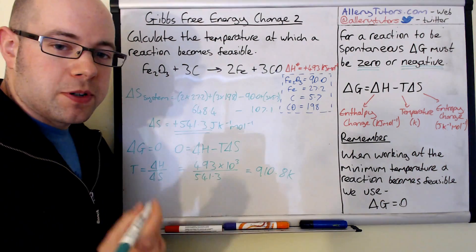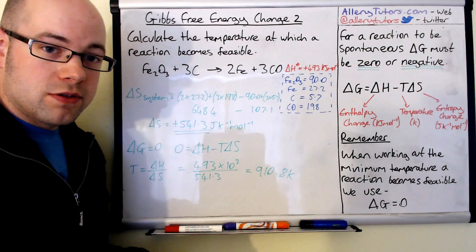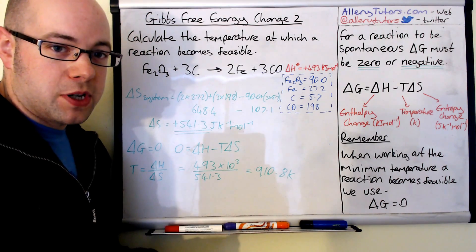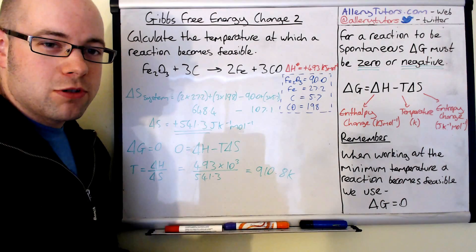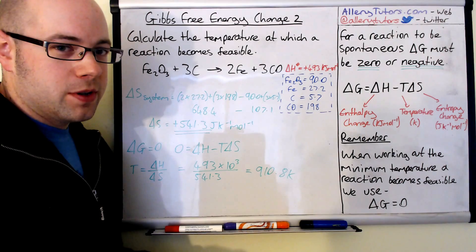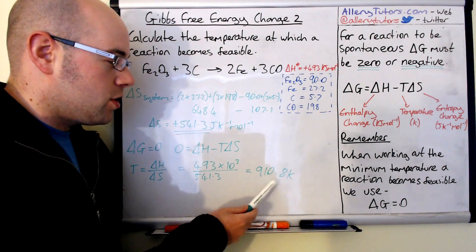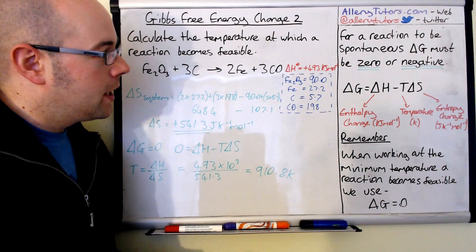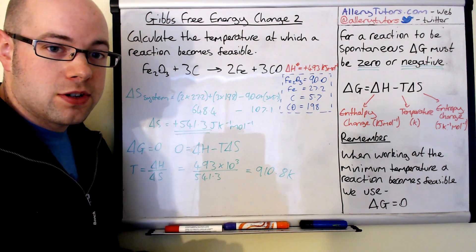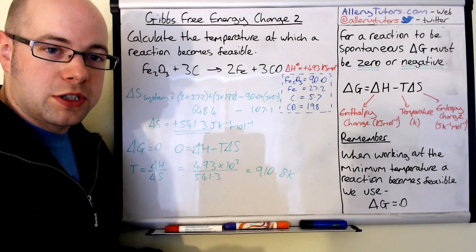This seems sensible because obviously we know that a blast furnace, you need a lot of heat to get this reaction to go. 910 is actually the minimum temperature that's required for this reaction to become feasible. So make sure you look at your value, make sure it looks sensible. If it looks ridiculous, so for example, that was something like 50, you know that your blast furnace is not going to operate at 50 Kelvin. Make sure you look at the number, make sure it's sensible as well.